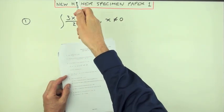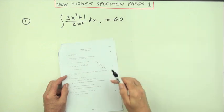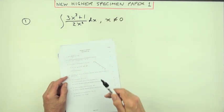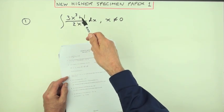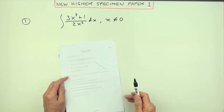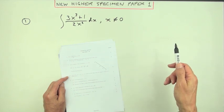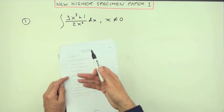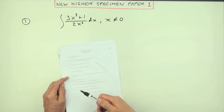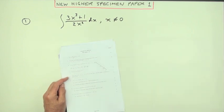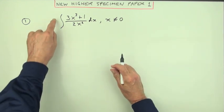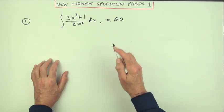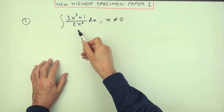So number one from this new higher specimen paper number one, an integration problem. When it says the new higher, it's exactly the same as the original higher before 2008 when they put in the multiple choice. Prior to that, you had paper one for 60 marks with short questions and paper two for 70 marks with longer questions.